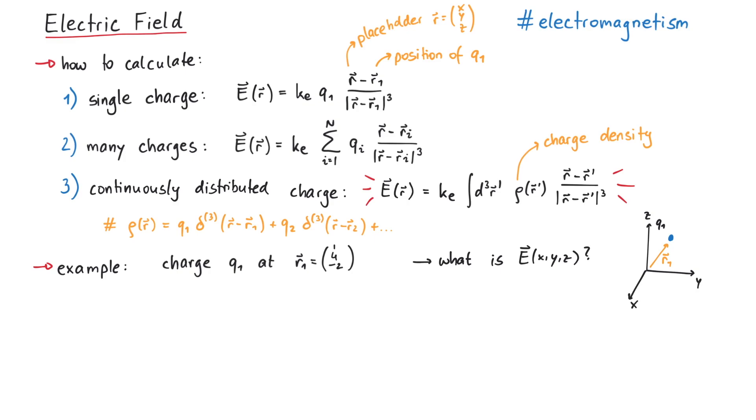Well, since this is just a single point charge, we can use the first equation from before, which stated that the electric field is given by KE times the charge times some vector, divided by the third power of this vector.